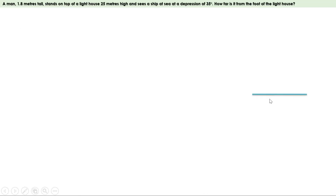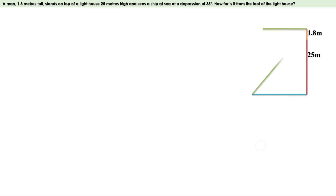Let us draw the figure. This is the ground and after the ground, the sea continues. There is a lighthouse, the height is 25 meters. The man is standing on the top of this lighthouse, his height is 1.8 meters. The ship is here. The man sees the ship at a depression of 35 degrees. Angle of depression means he has to look straight at first, then he has to look downwards. The angle between them is angle of depression, that is 35 degrees. Now let us give a name for this figure. We need to find the distance between the ship and the foot of the lighthouse, that is CD. We can see a right angle triangle here, triangle ACD. This angle is 35 degrees, therefore this angle is also 35 degrees, because these two lines are parallel lines and these are alternate angles.